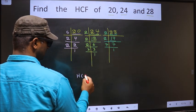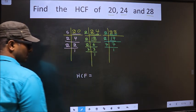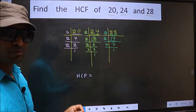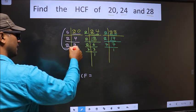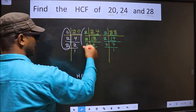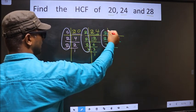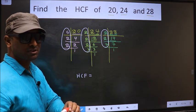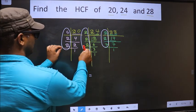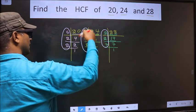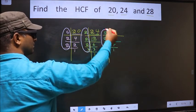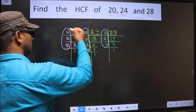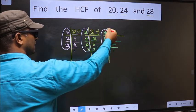So now our HCF is the product of numbers which should be present over here and here and also here. I repeat, HCF is the product of numbers which should be present in these 3 places, here, here and also here. So now let us find the numbers which are present here, here and also here.